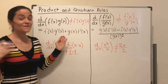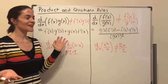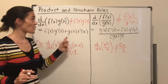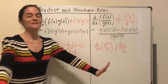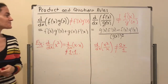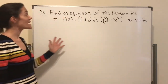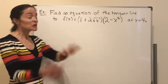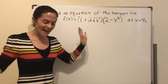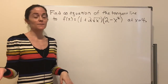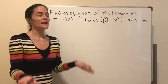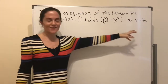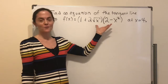At the end of this video, I will prove the product rule using the limit definition. For now, let's find an equation of the tangent line to the function at x equals 4. I could multiply this out and use the power rule, but I'm practicing the product rule. To find the slope of the tangent line — which is the derivative evaluated at x equals 4 — I'll use the product rule.